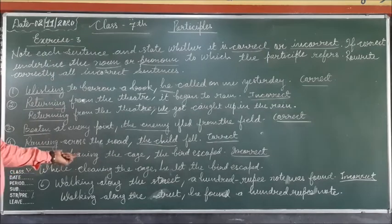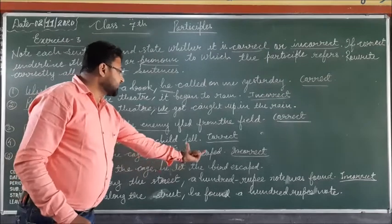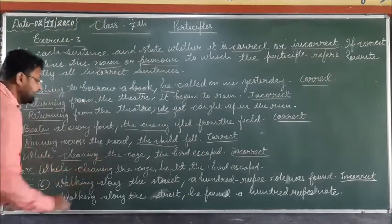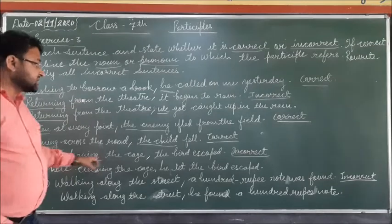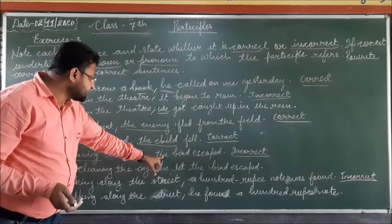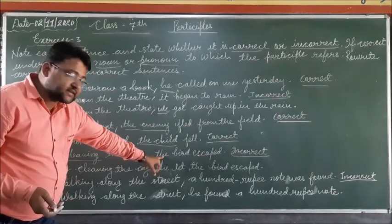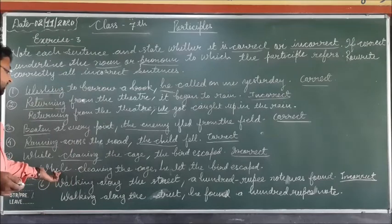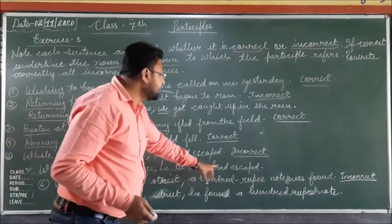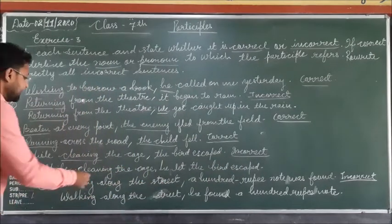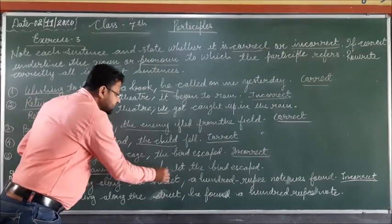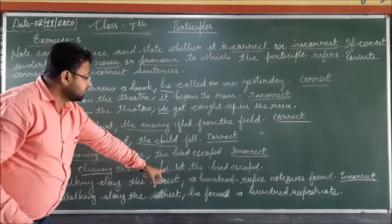Fifth sentence: 'While cleaning the cage, the bird escaped.' Here 'cleaning' is the participle, but there is no subject to which it refers. So it is an incorrect sentence. The correct sentence will be: 'While cleaning the cage, he let the bird escape.' Here 'cleaning' refers to the pronoun 'he.'